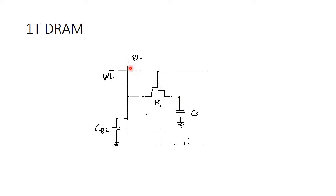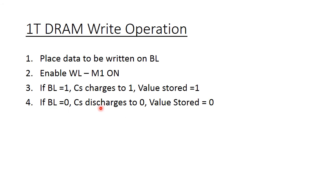To write a '0', we need to connect the bit line BL to ground using the pre-charge capacitor. As the word line is enabled, the capacitor gets connected to the bit line and whatever voltage was previously stored in the capacitor gets discharged to BL, making the capacitor value 0. So in 1T DRAM: if BL equals 1, the capacitor charges to 1 and the stored value is 1; if BL equals 0, the capacitor discharges to 0 and the stored value is 0.